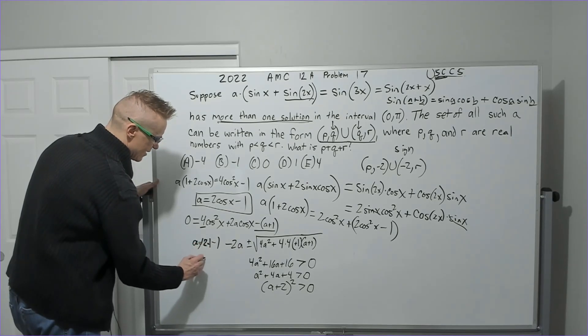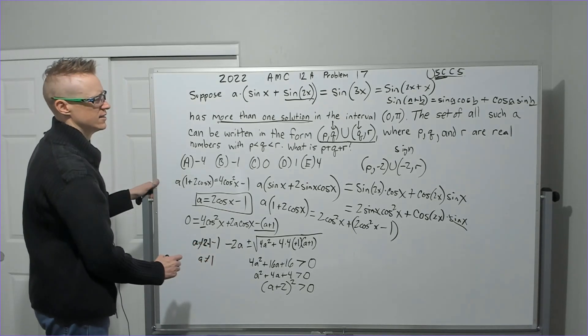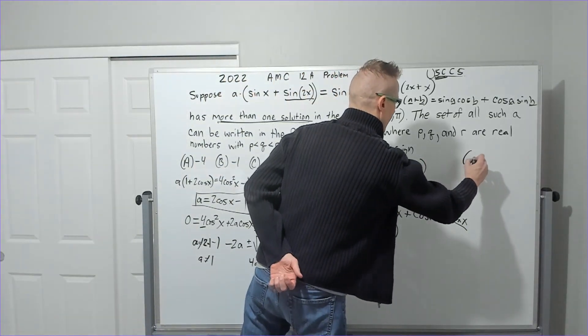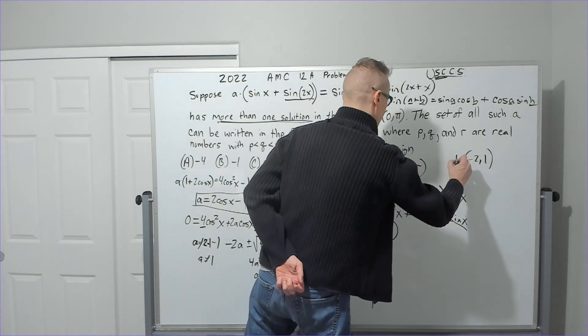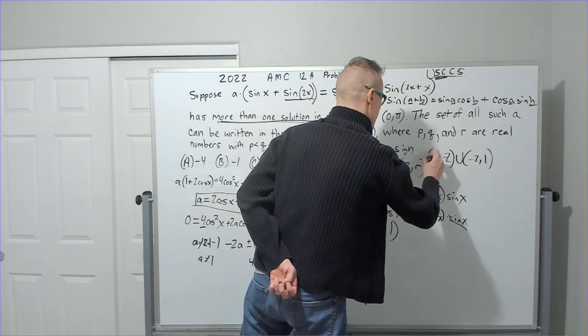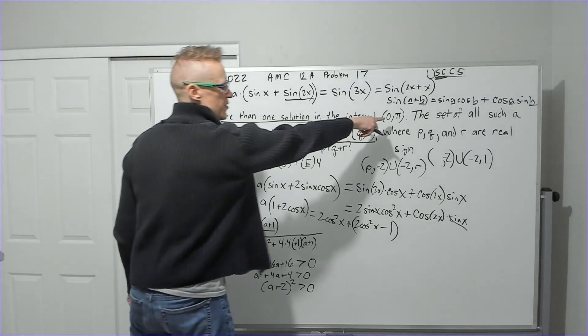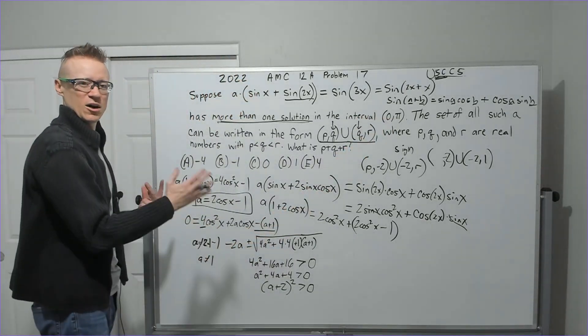Oh, well, that might be r over here. So now we'll have negative 2 to 1 union. Now we just got to figure out what that p value is. It's probably the other max value or min value.